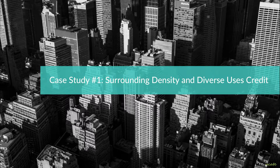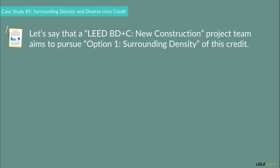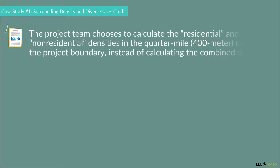To demonstrate the Surrounding Density and Diverse Uses credit, let's say that a LEED BD+C new construction project team aims to pursue Option 1, Surrounding Density, of this credit. The project team chooses to calculate the residential and non-residential densities in the quarter-mile or 400-meter radius of the project boundary, instead of calculating the combined density.